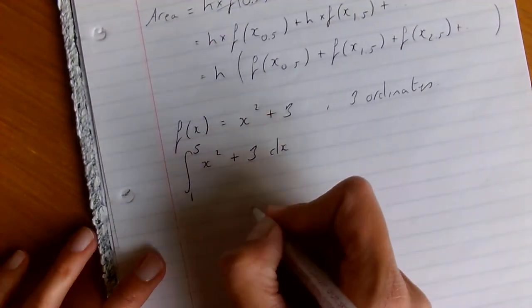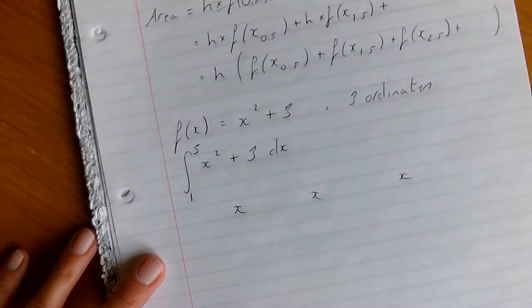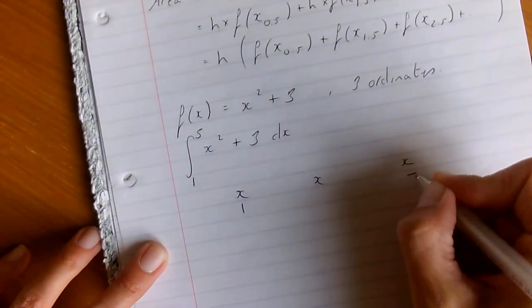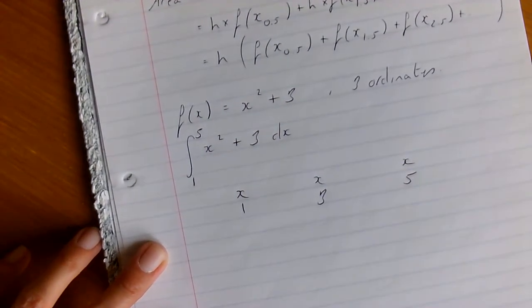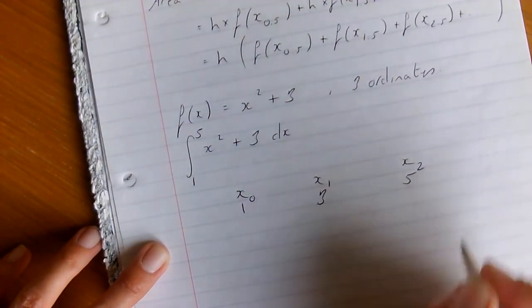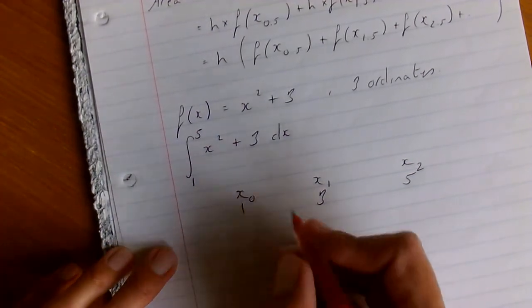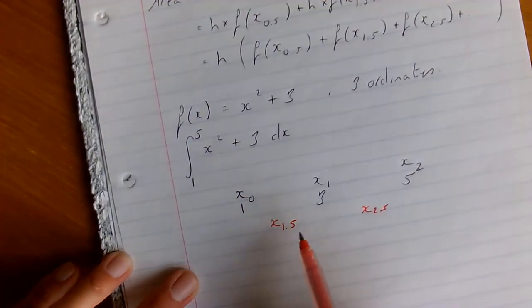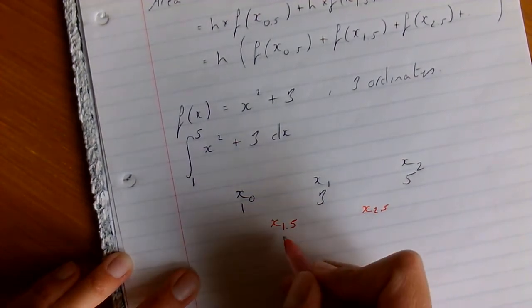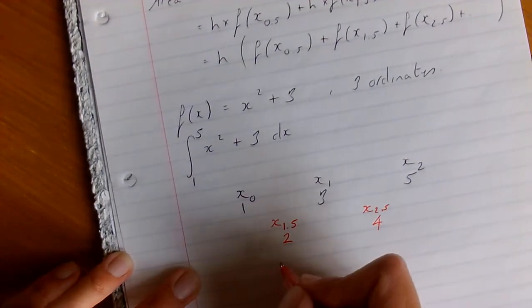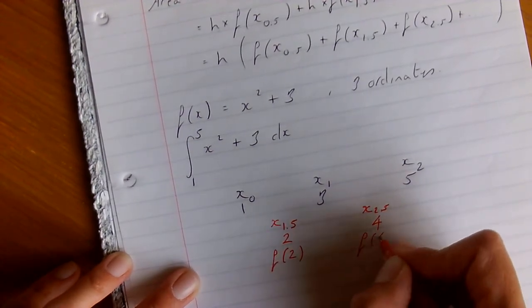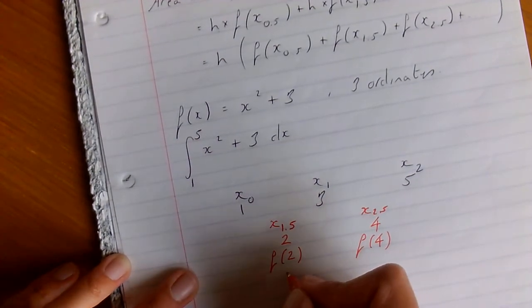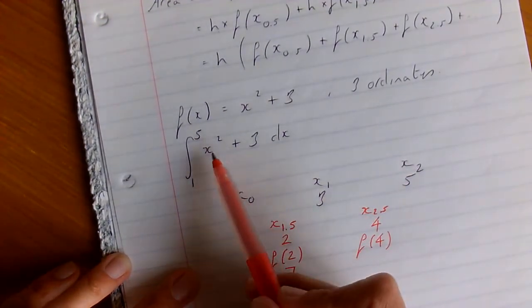So there's various ways you might want to set this out. x value, x value, x value. They're your 3 ordinates. The bottom ordinate is of course 1. And your top ordinate is 5. Which means the middle one must be 3. So this here would be x0, this would be x1 and this would be x2. But the actual middle that you're going to be using are halfway between 1 and 3, which would be 2. And then halfway between 3 and 5, which of course would be 4. And then we're going to work out the function at 2 and the function at 4. So I'm going to put x equals 2 into this equation, which would be 7. And then I'm going to put 4 into this equation, which would be 19.